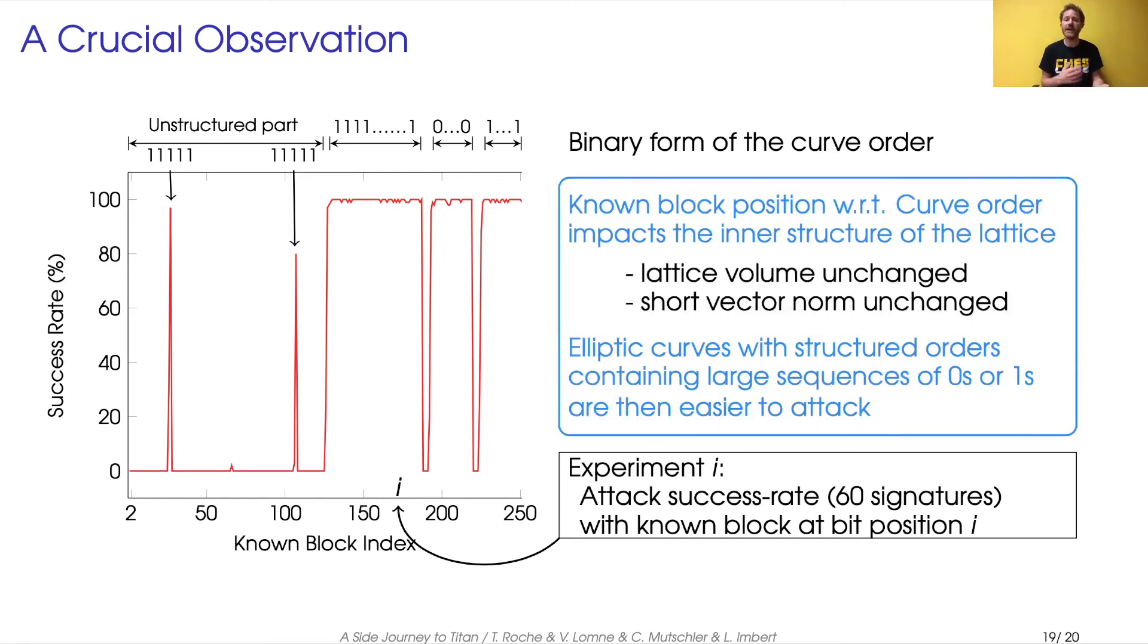So somehow there is a relation between the known block position and the curve order that impacts the inner structure of the lattice that is reduced in the attack. And this observation shows that somehow better understanding this lattice structure could help better create the lattice from the first place and then improve the attack.